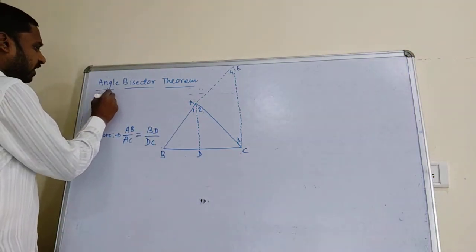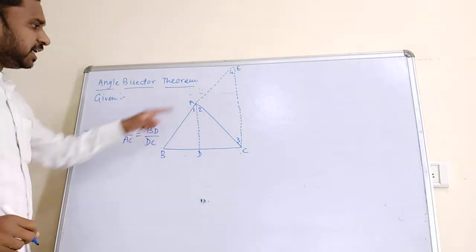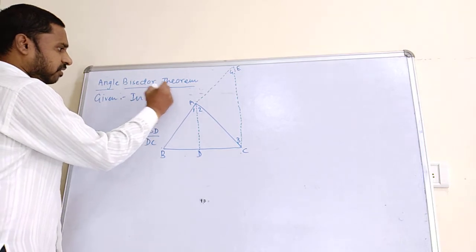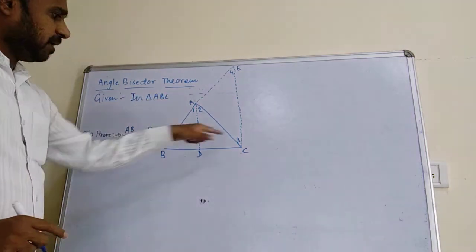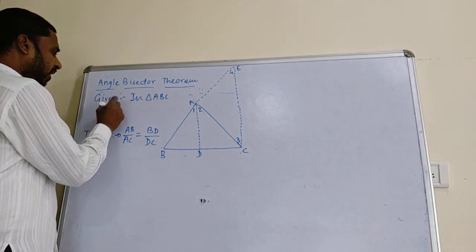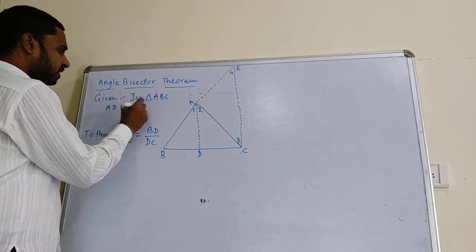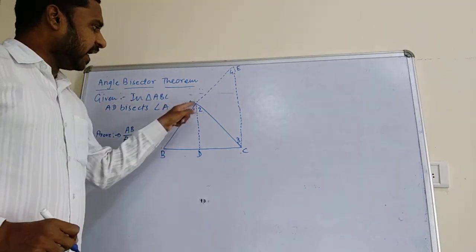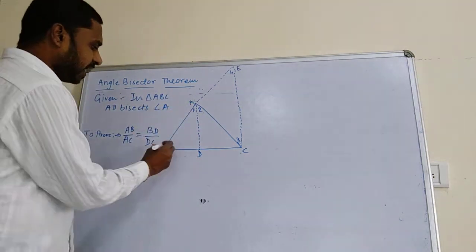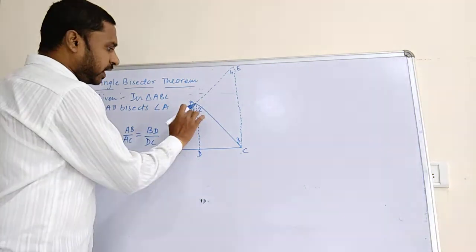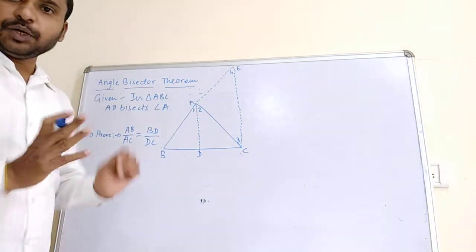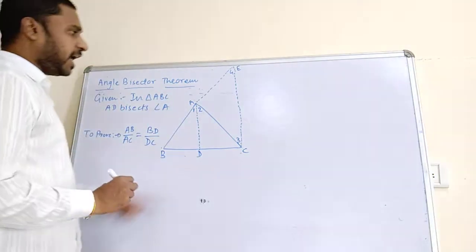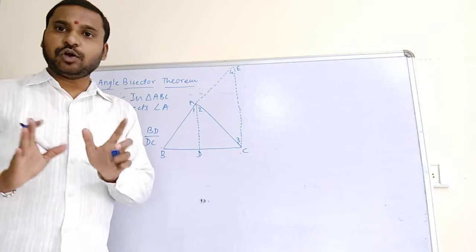Now, Given: In Triangle ABC, AD bisects Angle A. Angle A is being bisected, meaning your Angle A is divided into two equal parts — Angle 1 and Angle 2 — because of AD. Construction: Draw CE parallel to AD, and extend AB till E. We have done this construction here in order to save time.